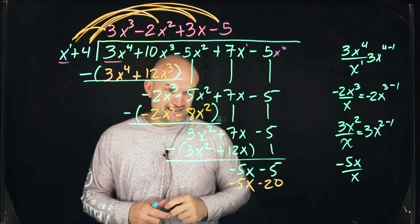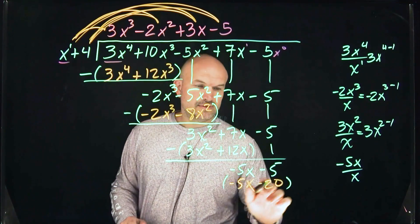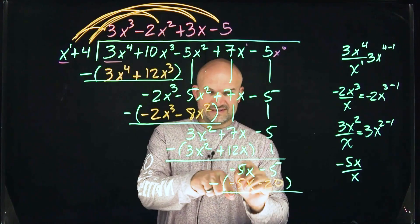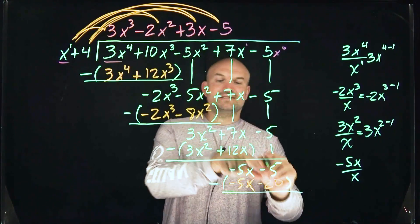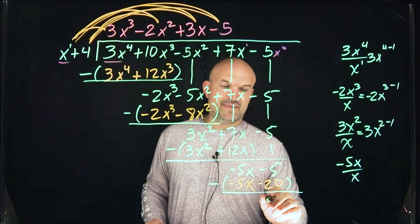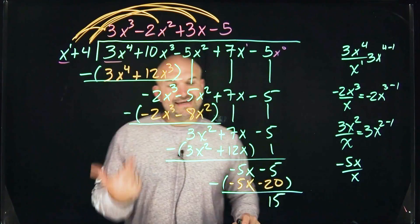Then we go ahead and subtract the rows. We have negative 5x. Those are exactly the same, so it goes to 0. Negative 5 minus a negative 20, so that's now going to be a positive 15. And here's where we are done.